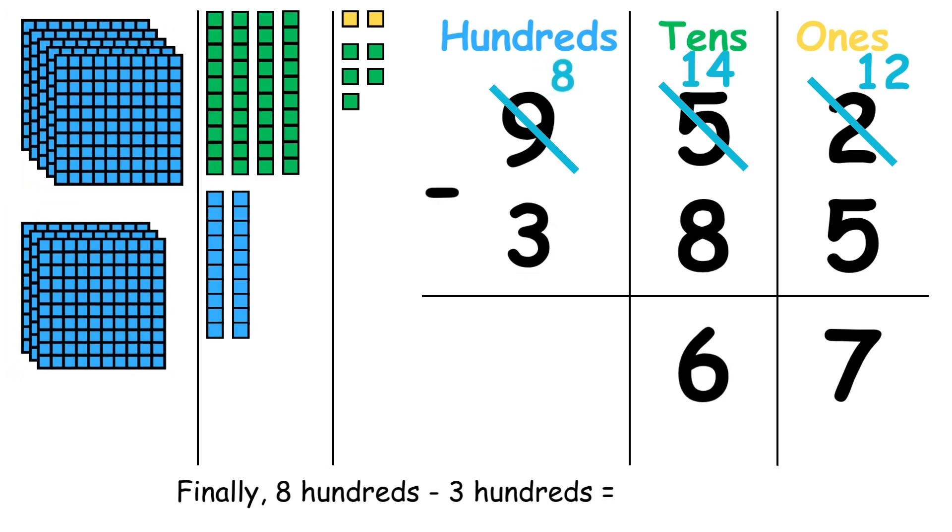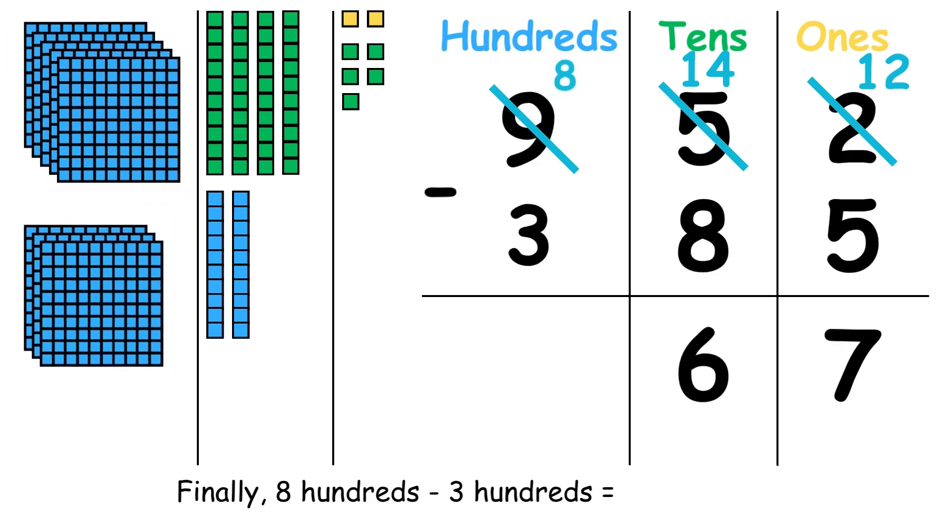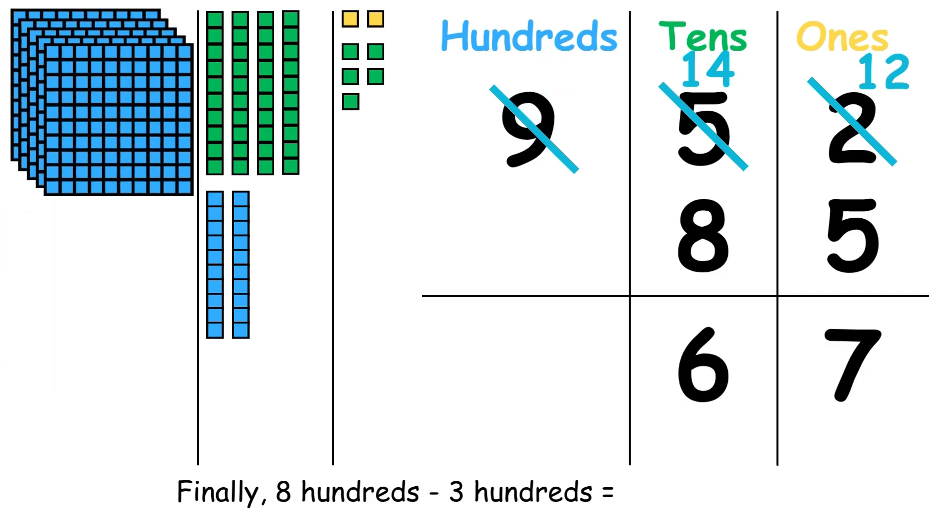Finally, 8 hundreds minus 3 hundreds equals 5 hundreds.